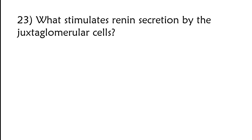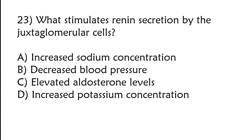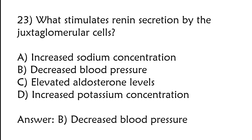What stimulates renin secretion by the juxtaglomerular cells? A) Increased sodium concentration, B) Decreased blood pressure, C) Elevated aldosterone levels, D) Increased potassium concentration. The correct answer is option B: Decreased blood pressure.